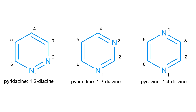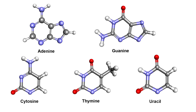The pyrazine where the nitrogens are at positions 1 and 4, the pyrimidine where the nitrogens are at positions 1 and 3, and finally pyridazine where the nitrogens are at positions 1 and 2. Now, only the pyrimidine isomer is found in the nucleic acids that encode genetic information.